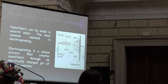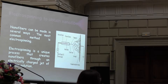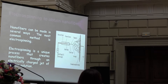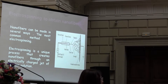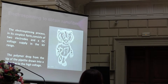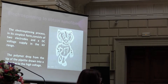Electrospinning to fabricate nanofibers. Nanofibers can be produced in several ways. The most common method is the electrospinning technique. Electrospinning is a unique process that draws fibers using low electrical charge, which works for polymer solutions. You can see in the picture some structural features of nanofibers.